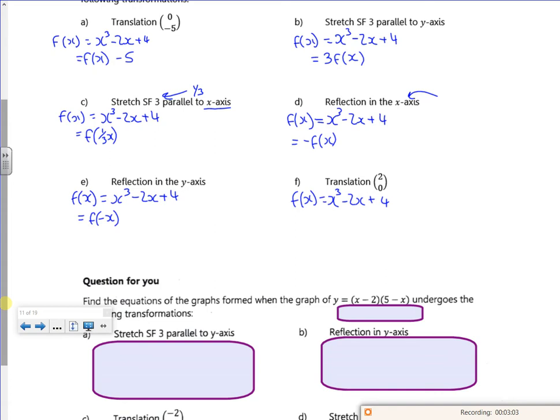And then what have we got? A translation to 0. So remember that's going inside with the x, but it's the wrong way round. Anything inside with the x gets put down the wrong way round.